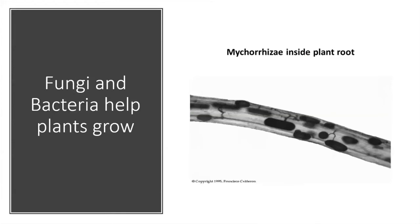Another important part of cheatgrass success lies with microorganisms. We know that fungi and bacteria can help plants grow. On the right is an image of a plant root, and inside you can see dark structures which are part of mycorrhizae — fungi that have structures inside plant cells but also have mycelia that spread throughout the soil. These mycorrhizae help plants grow by securing nutrients or water for the plants.